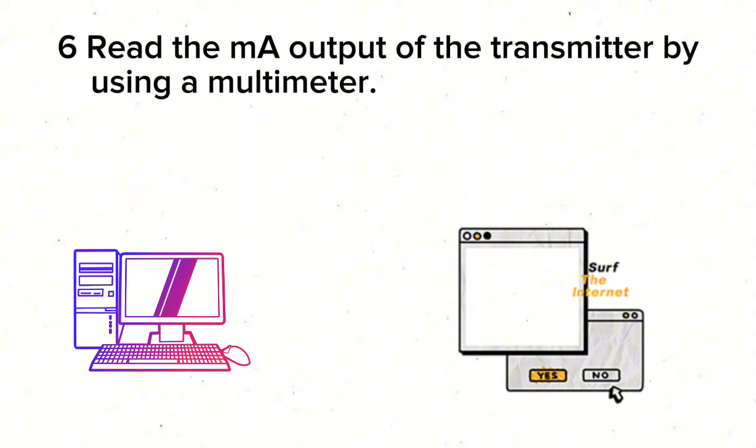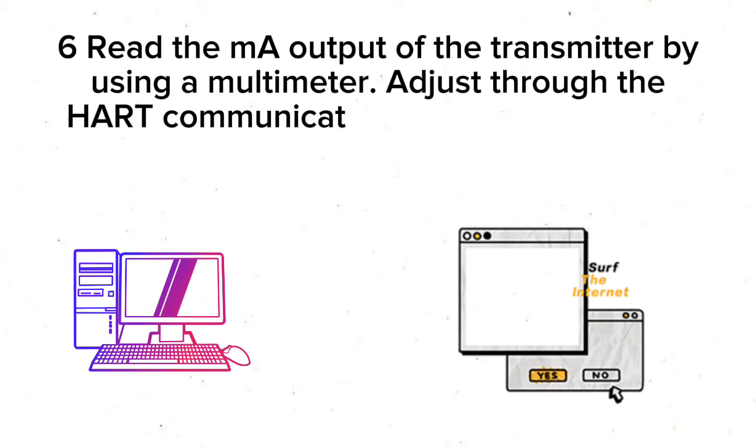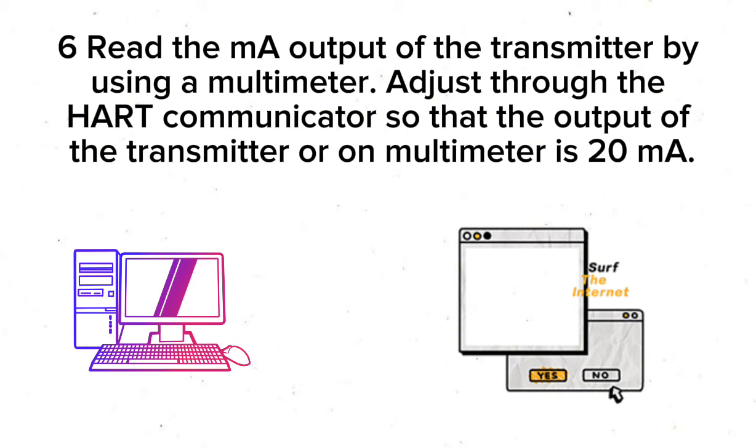Step 6: Read the mA output of the transmitter by using a Multi-Meter. Step 7: Adjust through the HART Communicator so that the output of the transmitter on Multi-Meter is 20 mA.